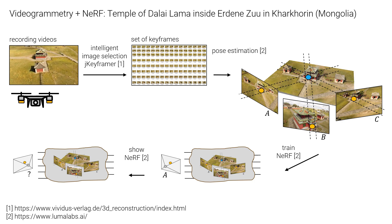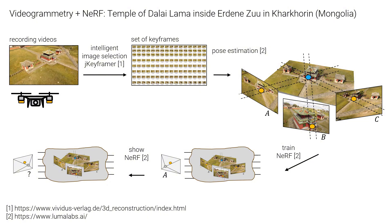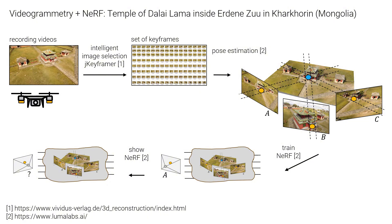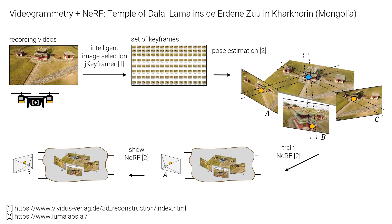However, instead of continuing to work with the point cloud like in photogrammetry, the neural network now trains on the images in relation to the geometric information that is available. For example, it learns to recognize the areas in front of, inside, and behind the object from each image, and also learns the colors that can be found at the various locations in the scene.